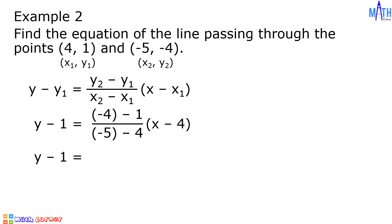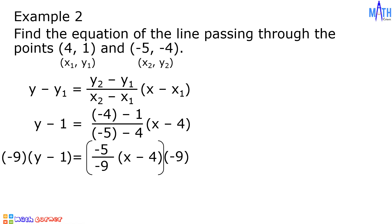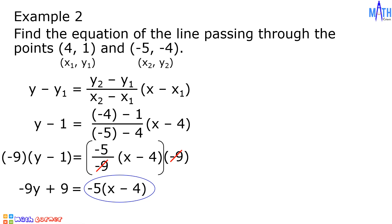We have y minus 1 equals negative 4 minus 1 equals negative 5 over negative 5 minus 4 is negative 9 times quantity x minus 4. Since we have negative 5 over negative 9, which is a fraction, let us multiply both sides of the equation by negative 9. We have negative 9 multiplied by y minus 1, which is equal to negative 9y plus 9, equals negative 9 multiplied by negative 5 over negative 9 times quantity x minus 4. Since negative 5 multiplied by x minus 4 is equal to negative 5x plus 20, then we have negative 9y plus 9 equals negative 5x plus 20.